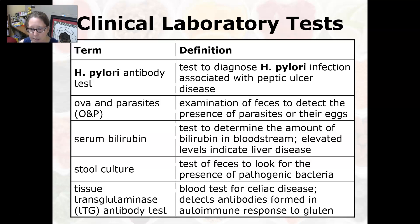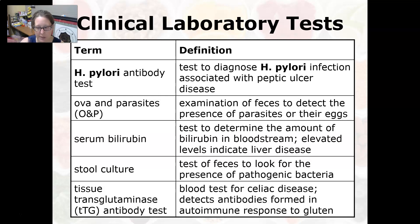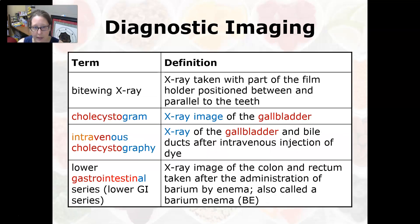The TTG test detects antibodies that are formed in the autoimmune response to gluten. If this test is positive, the patient has celiac disease. However, if it is negative, they could still have celiac and just not be reactive to that particular test.